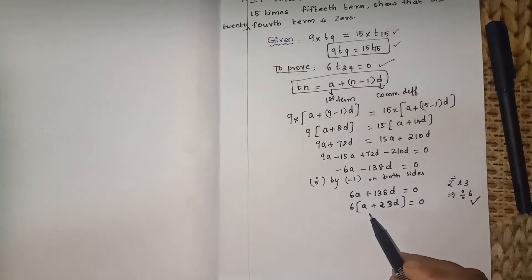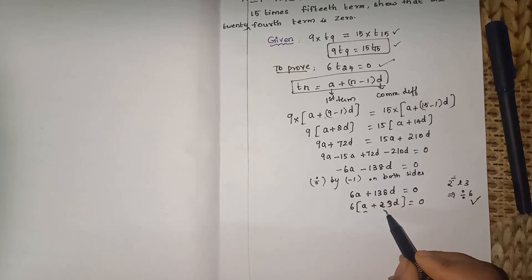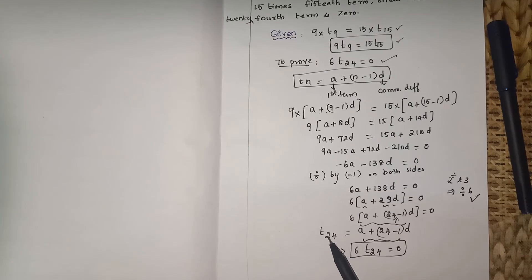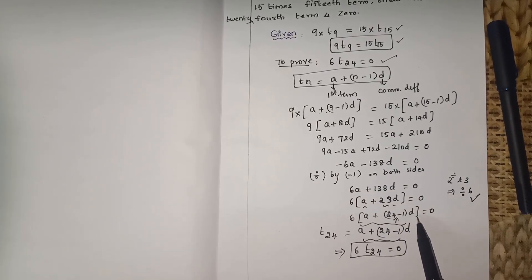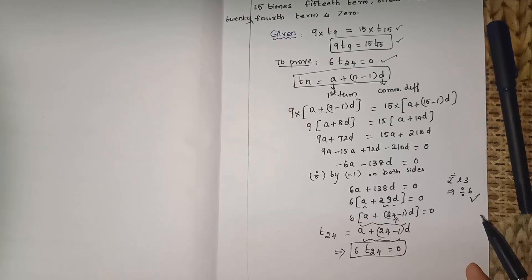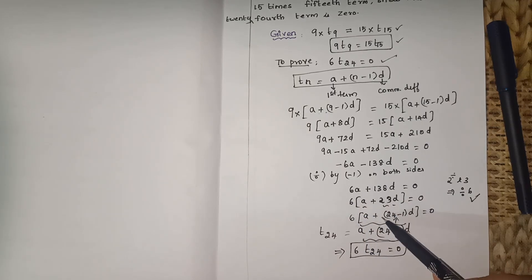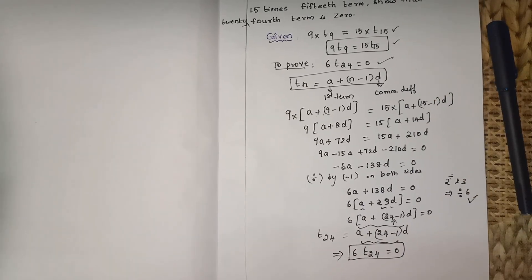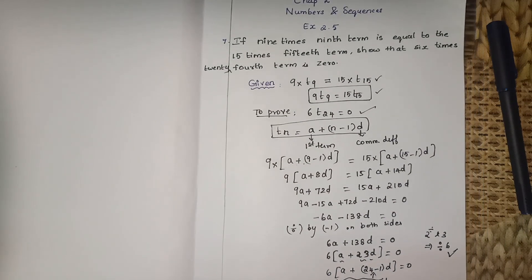Now look at this: a plus 23d is the same as a plus (24 minus 1)d, which is nothing but t24. So 6 times t24 equals 0, and hence it is proved. We finished the problem using only the given hint. Thank you for watching — please subscribe to the channel.